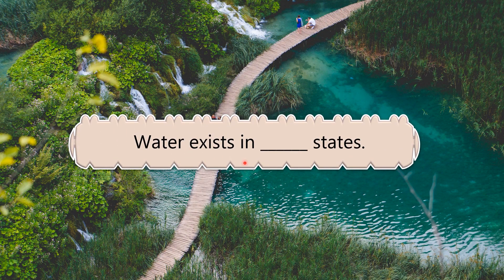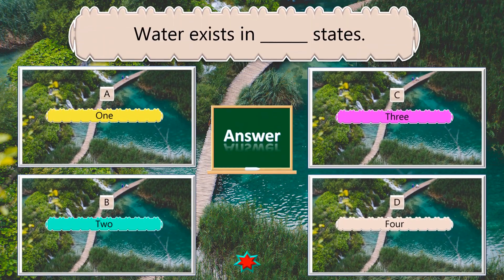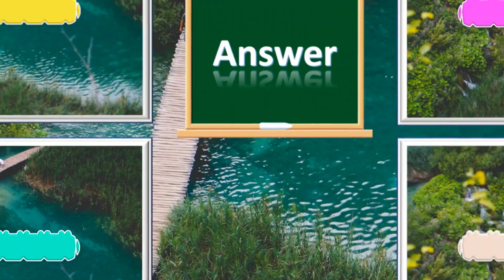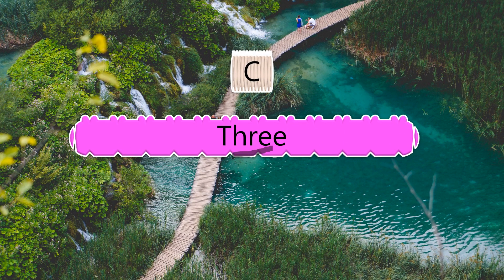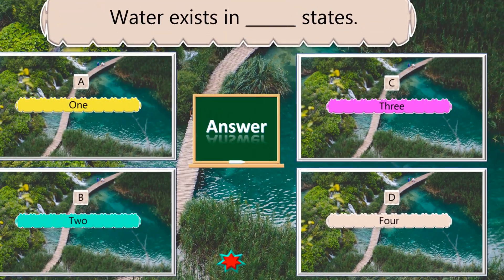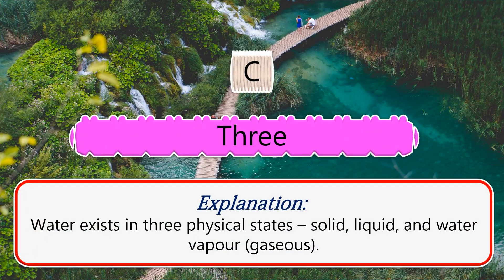Water exists in how many states? Options: one, two, three, four. The answer is three. Water exists in three physical states: solid, liquid, and water vapor.